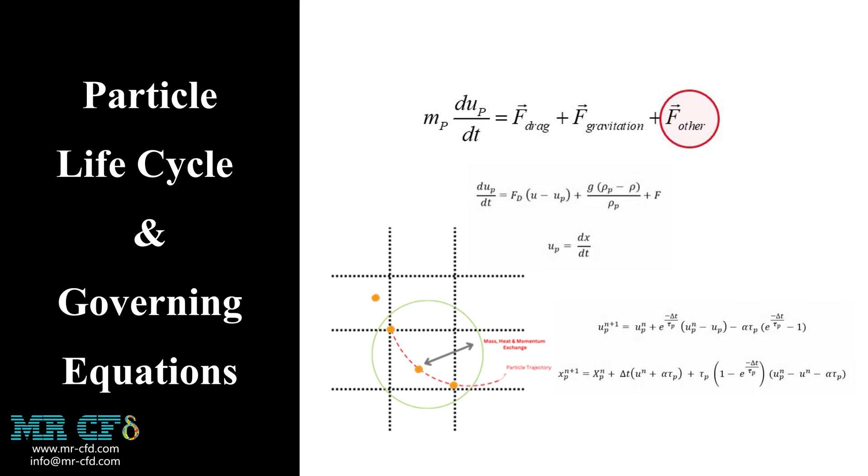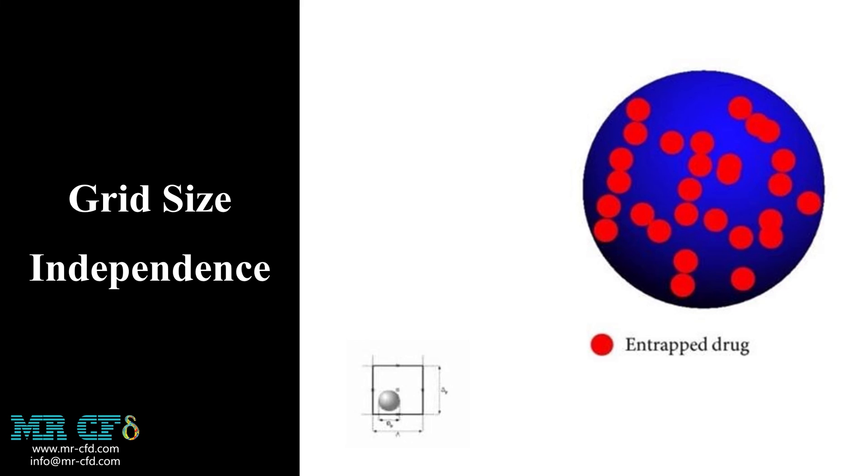In the final slide of the introduction chapter, we want to talk a little about grid independence. In numerical studies, the governing equations are discretized and are written in each cell. To have an exact safe solution, we must generate an appropriate mesh grid to accurately capture variables' value in each cell.